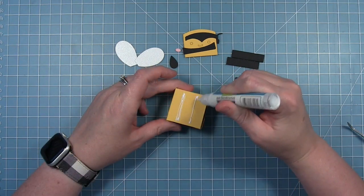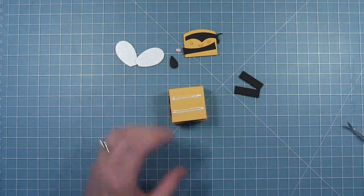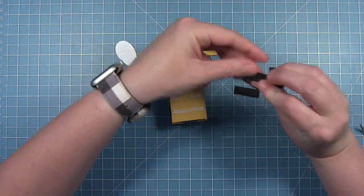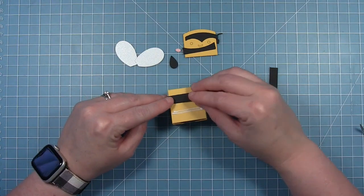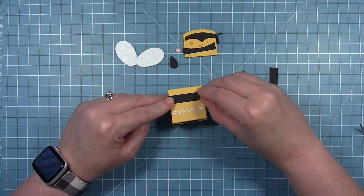The die that creates the two bars, which are slightly longer, those go on the top of the box. I've just put a little bit of glue where those stripes should be and I'm actually going to make sure that those line up with the stripes I just put on the side.